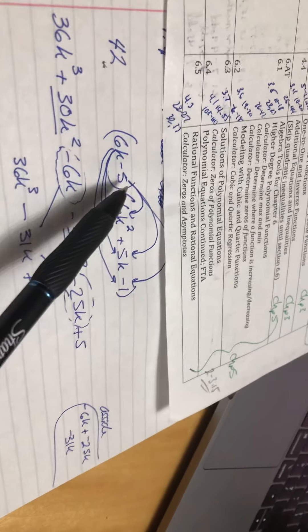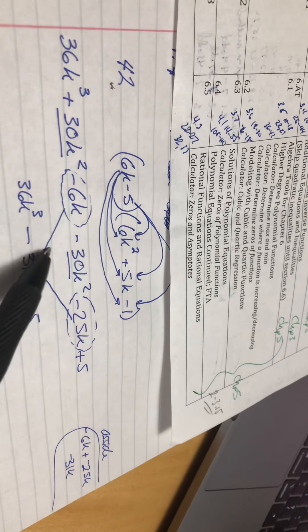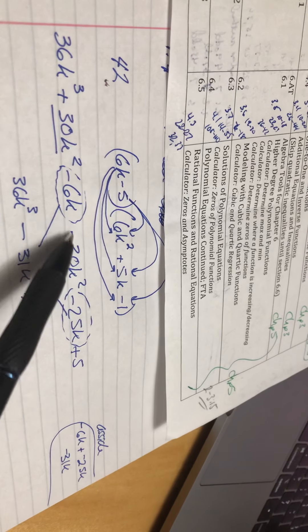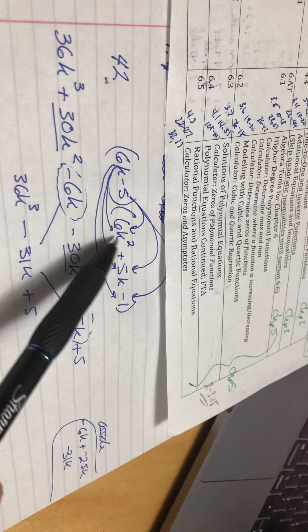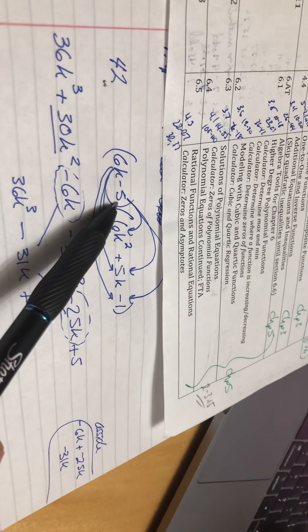And then we work with the negative 5. So the negative 5 is going to multiply by the 6k squared and we get negative 30k squared because negative 5 times 6 is negative 30. And the k squared doesn't have a match.